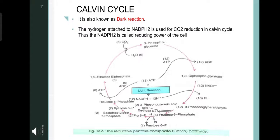Calvin cycle is also known as the dark reaction. The hydrogen attached to NADPH2 is used for reduction of carbon dioxide in the Calvin cycle. Thus the NADPH2 is called the reducing power of the cell. In the cycle, the first form compound is a 3-carbon compound, namely 3-phosphoglyceric acid, which is converted into 1,3-diphosphoglycerate, fructose 6-phosphate, sedoheptulose 7-phosphate, 1,5-ribulose bisphosphate, and finally again into 3-phosphoglycerate. During this process, ATP is produced in multiple steps.